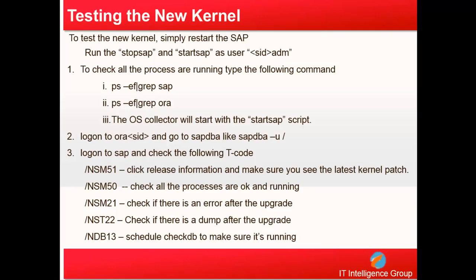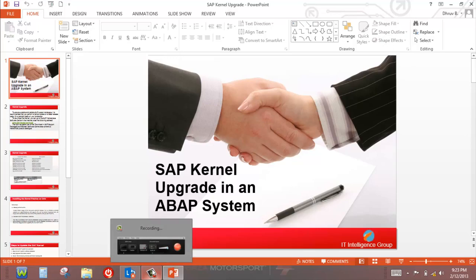Next, validate that the upgraded kernel is working. Run Stop SAP, then Start SAP as the <SID>adm user, and search for SAP or ORA processes to confirm they are up and running. Then log in to SAP and check that SM50, SM51, SM21, ST22, and DB13 are all working — these checks indicate whether the system is working properly after the kernel upgrade. That's all for this training session. Thanks for joining, and have a nice day.